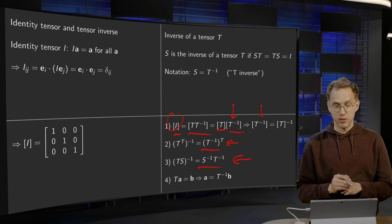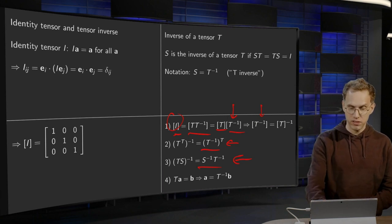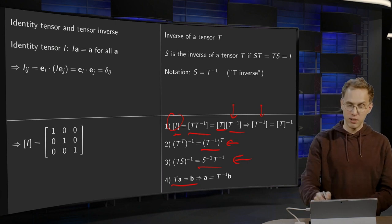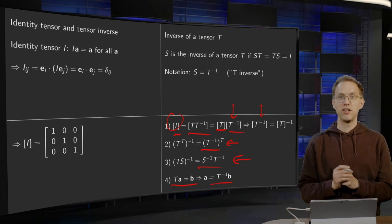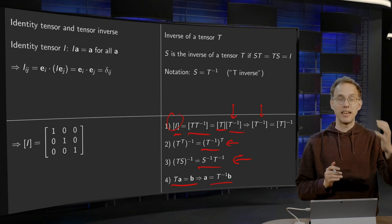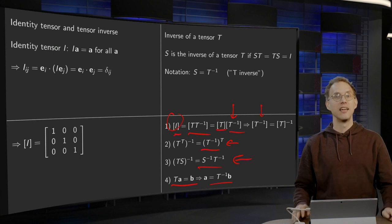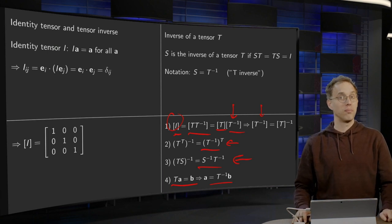Fourth rule: if your T is invertible and you want to solve T times A equals B, and you happen to know the inverse of T, then you can write A straight away as T inverse times B. So, identity tensor and inverse of a tensor are exactly as you would expect from linear algebra.